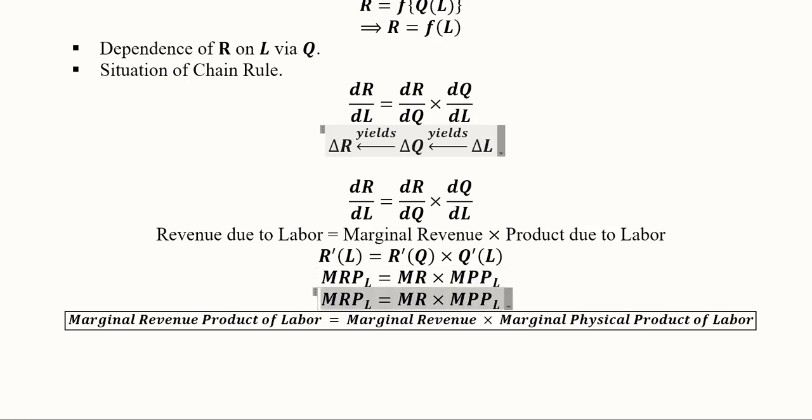So this is the way of understanding this relationship which is telling us that the marginal physical product of labor, the additional units that we have produced, if we multiply it with the marginal revenue that we are gaining from each of the physical product, we will get this in monetary terms, which will be known as marginal revenue product of labor. Because the marginal physical product of labor will have the units of some physical form, for example kilograms or liters, and this will be in monetary terms. So when we multiply this, we will get a monetary answer which will be representing the marginal revenue product of labor.